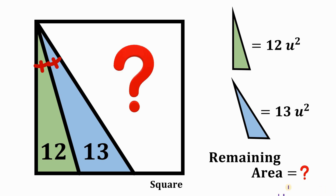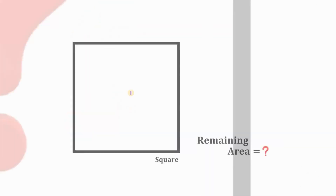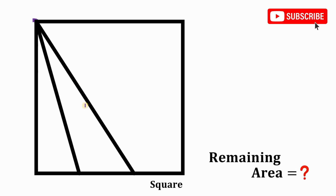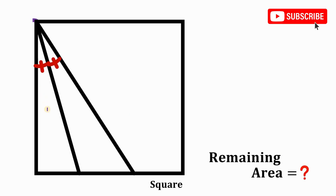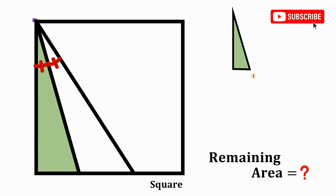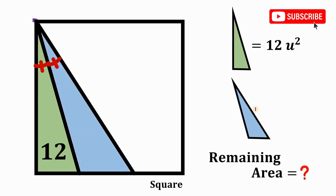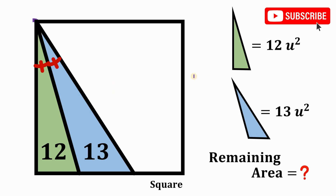Can you solve this geometry challenge? Here's the question. Let's begin with a square and consider a point on the square. We'll draw two segments, and take note that these two angles are congruent. Now consider this green triangle with an area of 12 square units, and this blue triangle with an area of 13 square units.